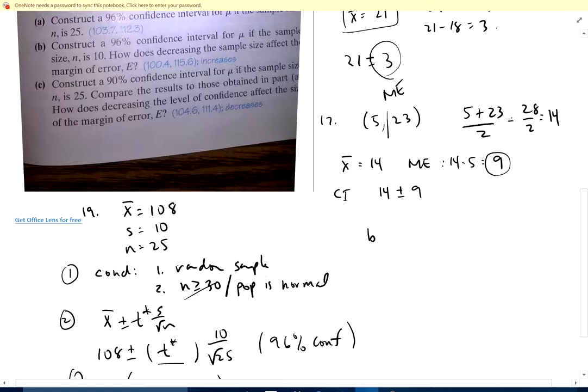B, construct a 96% confident interval for mu if the sampling size is 10. The only thing that's going to change is this guy right here and this guy right here, and I'll do that in my calculator. It'd still be 108 plus or minus T star times 10 over the square root of 10. And if you do that you get 100.4 and 115.6.